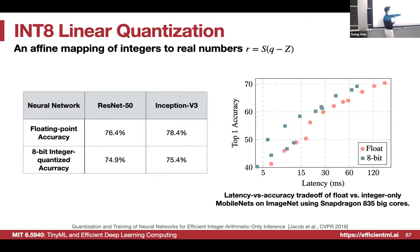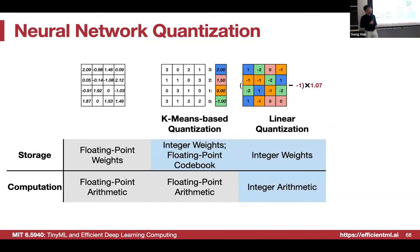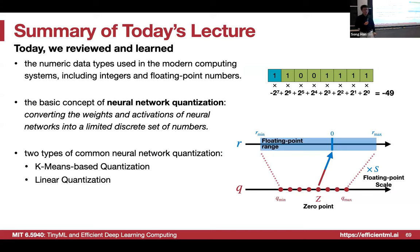This method maintains accuracy very well — the floating point and integer representations have similar accuracy — but the latency can be significantly reduced. That's all for linear quantization. The next lecture will cover how to calibrate rmin and rmax, and if time permits, binary representation. That will be part of the homework — diving deep into these equations. Everything is linear, so re-watch the lecture when doing the homework. The equations translate directly into code.